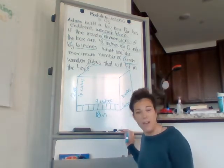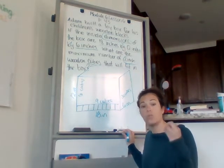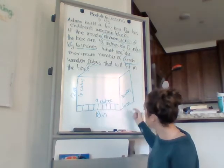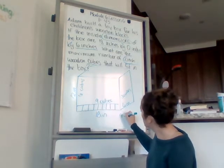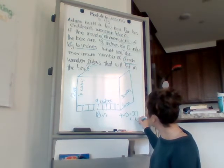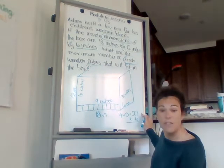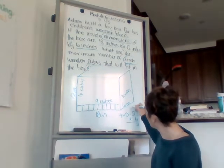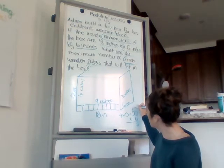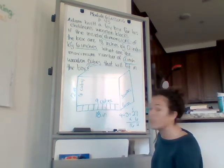So then all we have to do to find out how many total cubes would fit in here is multiply our cubes together. So 9 times 3, 27. 27 times 6. 6 times 7 is 42. 6 times 2 is 12. 13, 14, 15, 16. 162.